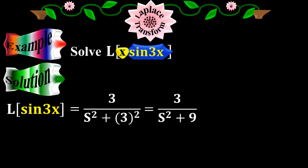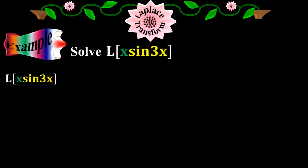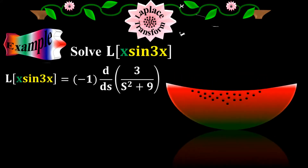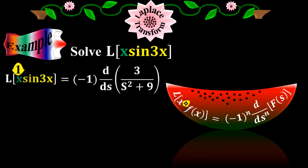Now find the Laplace of x times sine 3x. Laplace of x times sine 3x equals minus 1 times d/ds of (3 over s squared plus 9), applying the multiplication-by-x formula. Here x to the n is x, f of x is sine 3x, and Laplace of sine 3x is 3 over s squared plus 9. The value of n is 1.